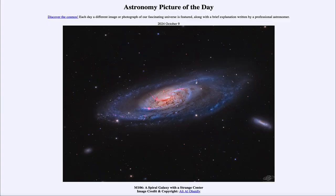Greetings and welcome to the Astronomy Picture of the Day podcast. Today's picture for October 9th of 2024 is titled M106, a spiral galaxy with a strange center.